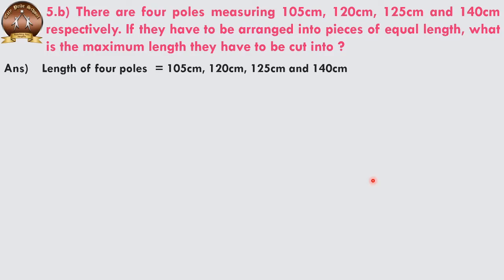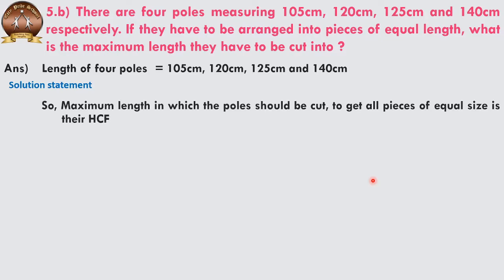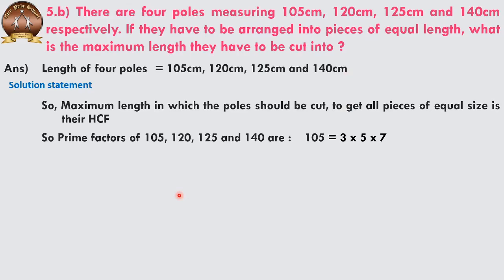The length of the four poles is 105 cm, 120 cm, 125 cm, and 140 cm. Looking at the solution: the maximum length into which the poles should be cut to get all pieces of equal size is their HCF. HCF is smaller than these numbers, but it is the maximum equal length possible. To find the HCF, we find the prime factors of these numbers.